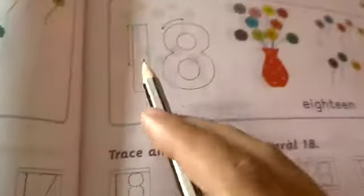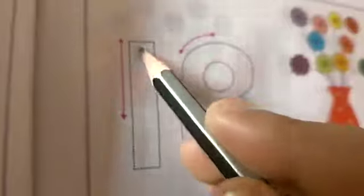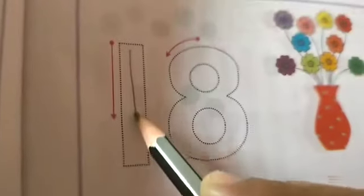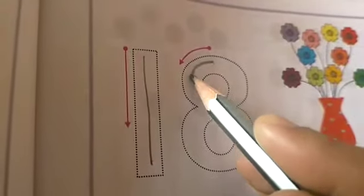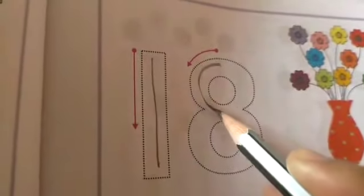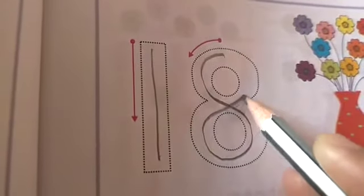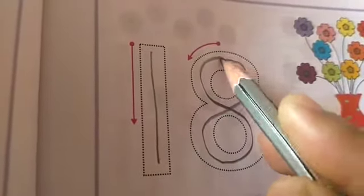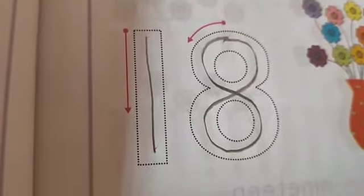Next one is numeral 18. Top to down straight — start from here, then go around and round and round and round. Like this, you have to write numeral 18.